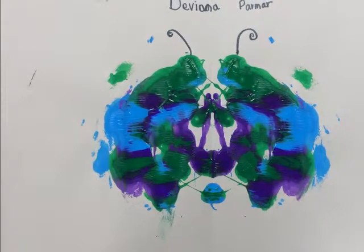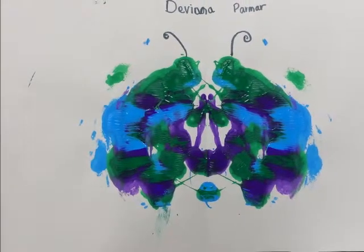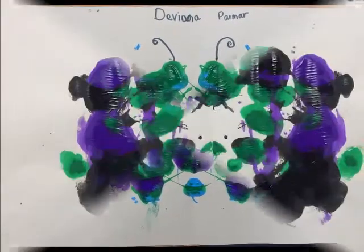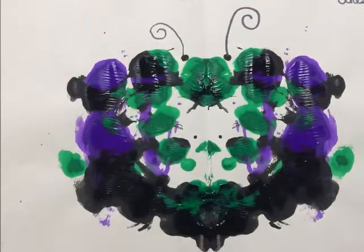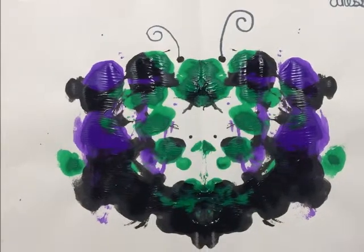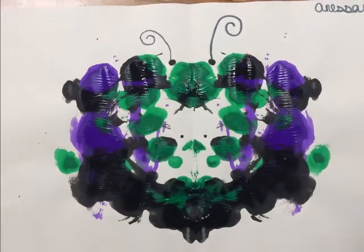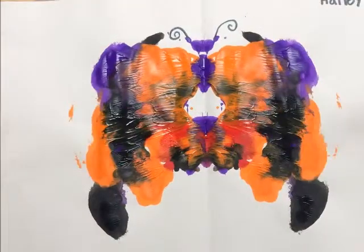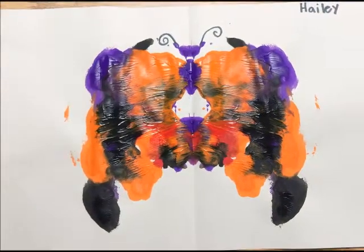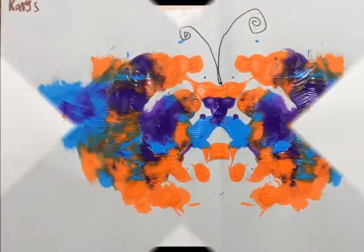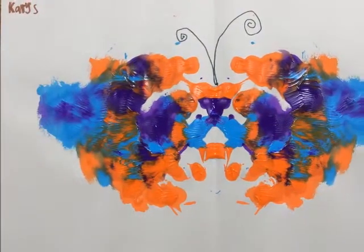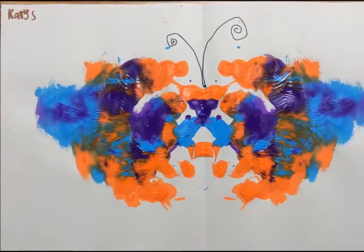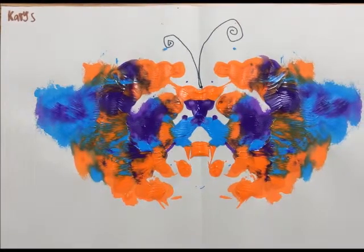Afterwards, I displayed the artwork around the room for students to show me the symmetry line on their butterfly artwork and explain to me why the symmetry line worked. Next, I had my students add in details such as the body, antennas, wings, and other features they learned about to their butterfly painting using markers.